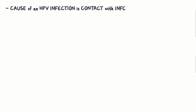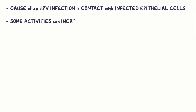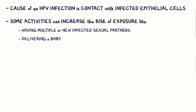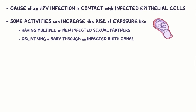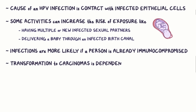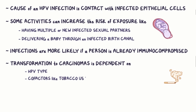The cause of HPV infection is contact with infected epithelial cells. Some activities can increase the risk of exposure, like having multiple or new infected sexual partners, or delivering a baby through an infected birth canal. Infections are more likely if a person is already immunocompromised. Transformation to carcinoma is dependent on HPV type and is aided by other cofactors, like tobacco use, immunosuppression, and radiation.